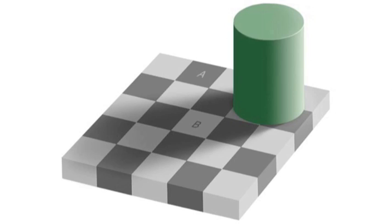Here's the basic setup. There's what appears to be a green cylinder casting a shadow on a checkerboard. One square is labeled A, and another square is labeled B. The question is, which square is darker? Square A or square B?